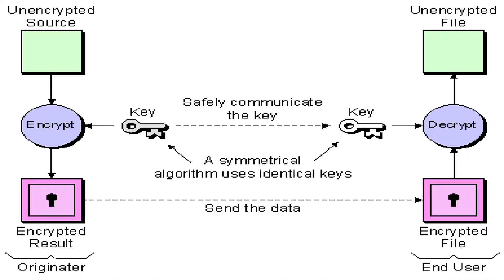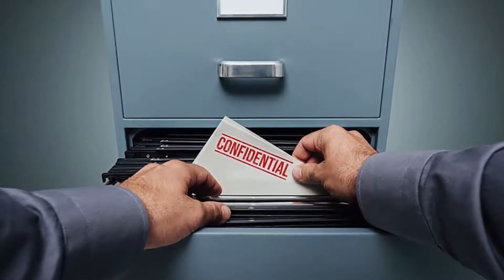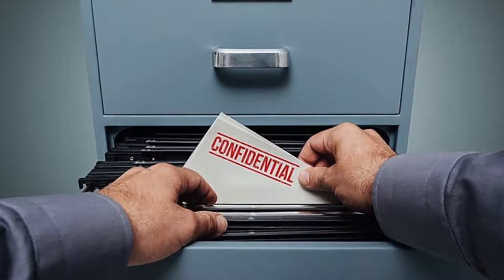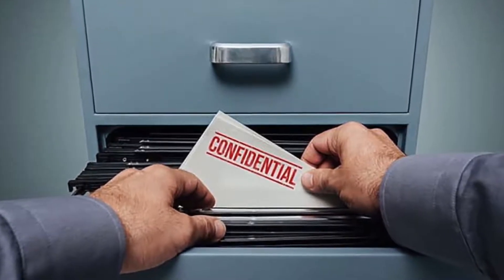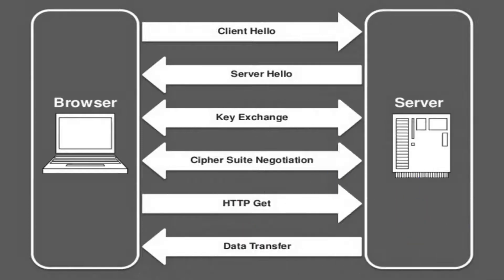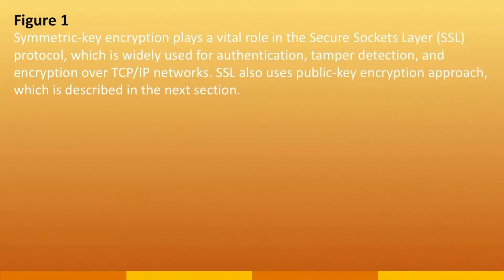As long as the symmetric key is kept secret by both the sender and receiver, they can be sure that communication is with the intended recipient as long as the decrypted messages continue to make sense. Symmetric key encryption is effective only if the key is kept secret by both the sender and receiver. If anyone else discovers the key, it affects both confidentiality and authentication. A person with an unauthorized symmetric key cannot only decrypt messages sent with that key, but can encrypt new messages and send them as if they came from one of the two parties originally using the key. Symmetric key encryption plays a vital role in the secure sockets layer (SSL) protocol, which is widely used for authentication, tamper detection and encryption over TCP/IP networks.